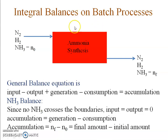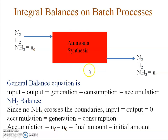Let's take an example of ammonia synthesis. Assume this is a batch reactor being charged at time t = 0 with nitrogen and hydrogen. Let's say the initial amount of ammonia is N₀, which we can take as zero. After some time the reaction has taken place; we open the reactor and discharge the contents. We get nitrogen, hydrogen, and some amount of ammonia that has formed — let's say Nf moles of ammonia.